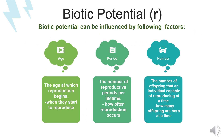Biotic potential is influenced by three factors: age, period, and number. For age, we look at when individuals in the population start to reproduce. For period, we look at how often reproduction occurs. For number, we look at how many offspring are born at a time.